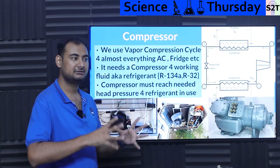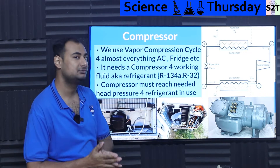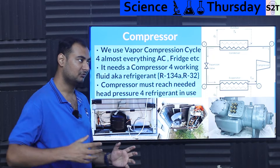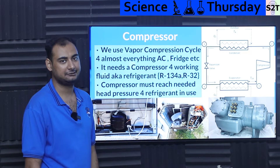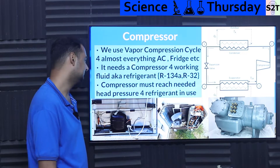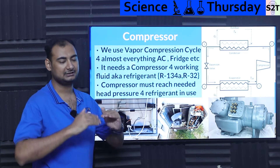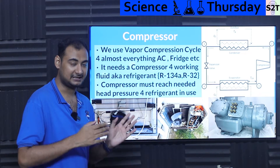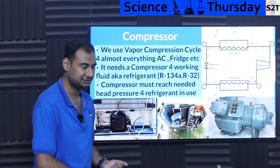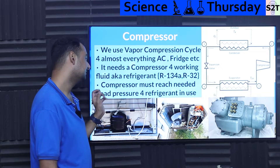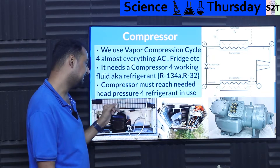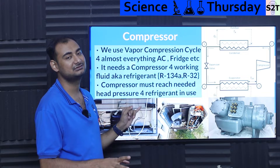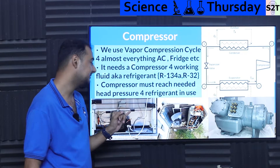A refrigerator designed to work on an easy-to-handle gas will not serve well if you just swap in a high-pressure gas. Every temperature vector has to be controlled by the compressor and right selection. The compressor must meet the needed head pressure — especially for CO2, which is the worst-case scenario in terms of refrigeration requirements.